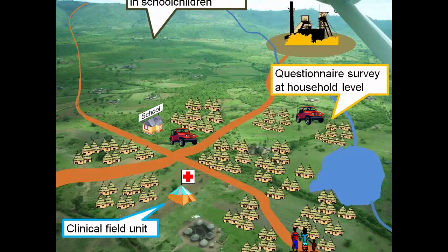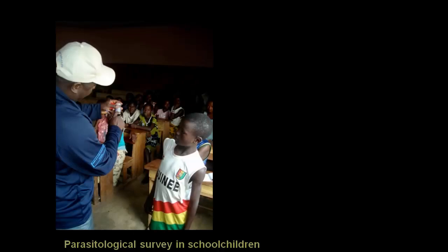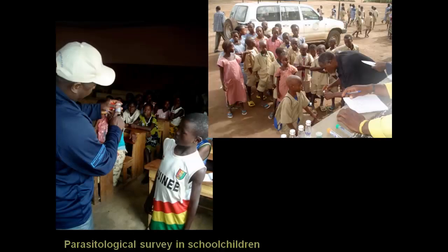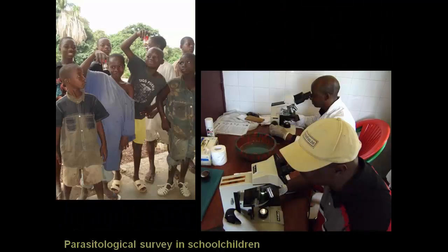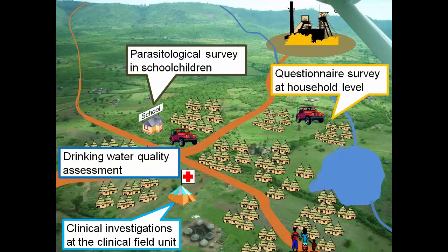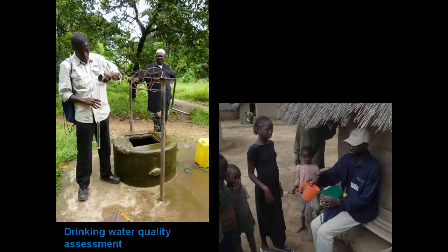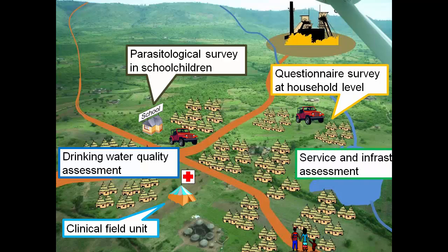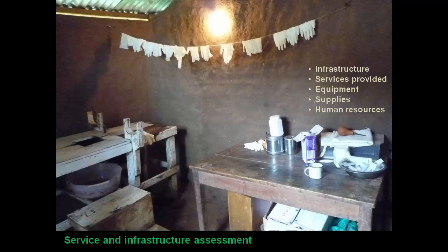In parallel, the parasitological survey team collected urine and stool samples in school-aged children to determine the prevalence and intensity of soil-transmitted helminths and schistosoma infection. Further modules of the baseline health survey included a drinking water quality assessment, which targeted community drinking water points as well as households, and a service and infrastructure assessment that evaluated infrastructure, services provided, equipment, supplies, and human resources at local health facilities.